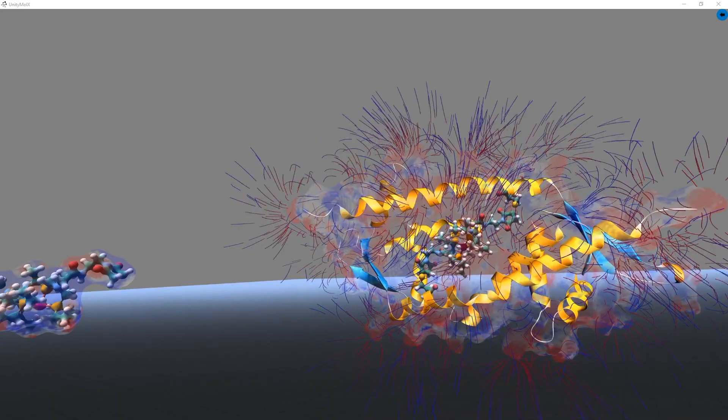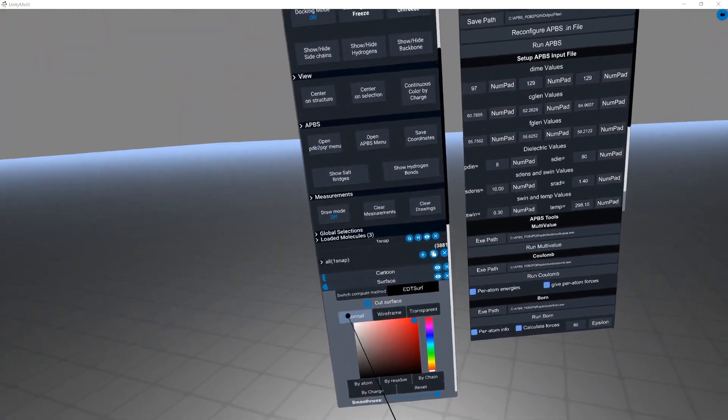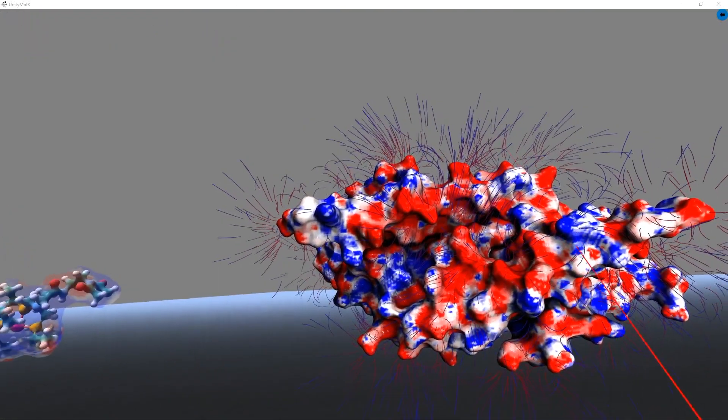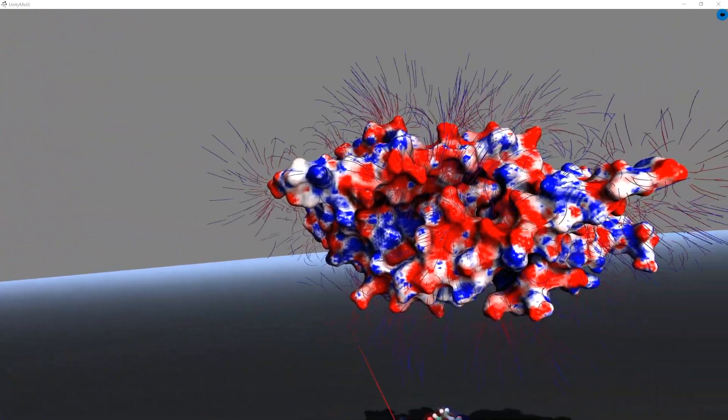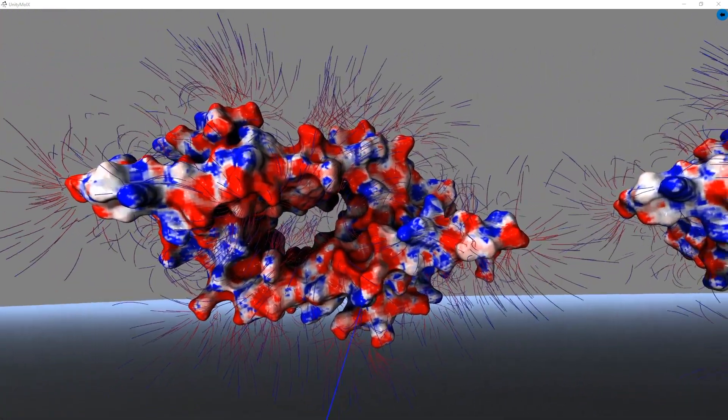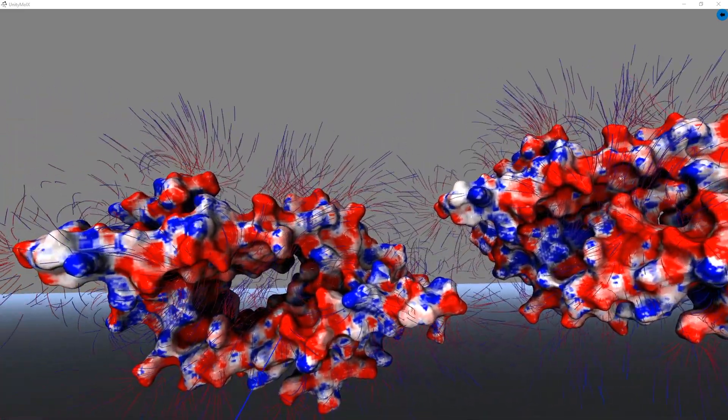We can now represent our enzyme as a solid surface. After we do that, we can now compare the electrostatic surface potentials of our artificial enzyme to the native LMRR system.